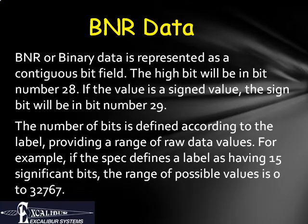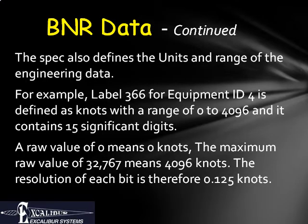Binary data is most familiar to people used to working with computers. It may be a signed or unsigned number. If it is a signed number, the lowest of the SSM bits — bit 29 — will be used as the sign bit. Bit 28 will be the most significant data bit, and the least significant data bit will be determined by the number of significant digits called out in the specification for that label. The number represented by the field is called the raw data. To translate raw data into useful data, which we call engineering units, we need to get more information from the specification.